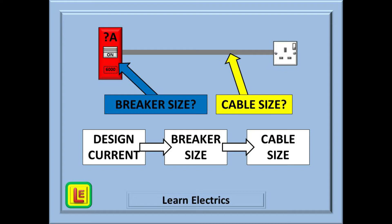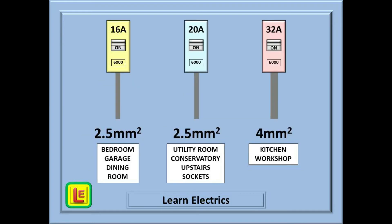And it must always be in that order: know what the current demand or design current is first, then select the breaker size, and finally choose the cable size. We are only discussing socket circuits today; selecting breaker sizes for other types of circuits is the subject of another Learn the Electrics video.